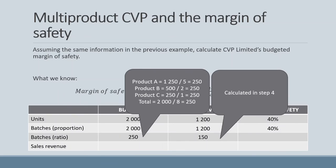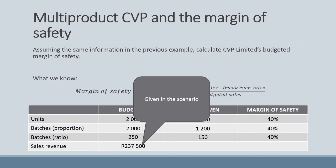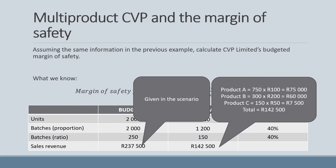Finally, using sales revenue: the budgeted sales revenue of R237,500 is given in the scenario. To calculate breakeven sales revenue, we take the individual breakeven units for each product, multiply by the selling price per unit, and sum to arrive at R142,500. This also gives a margin of safety of 40%. Any of these methods will give the final margin of safety of 40%.